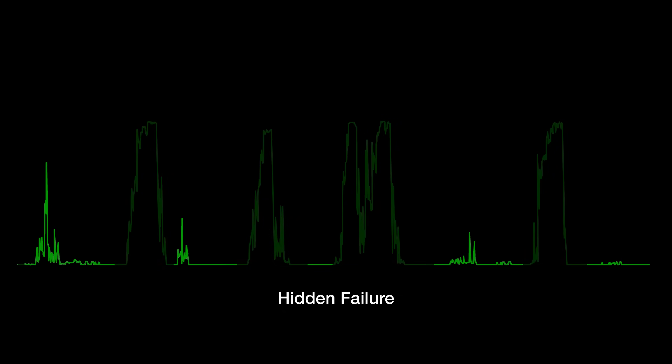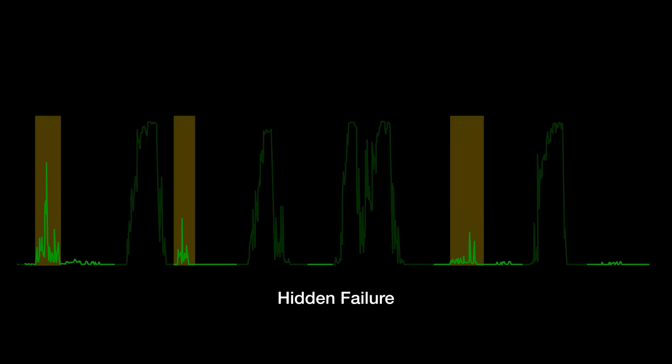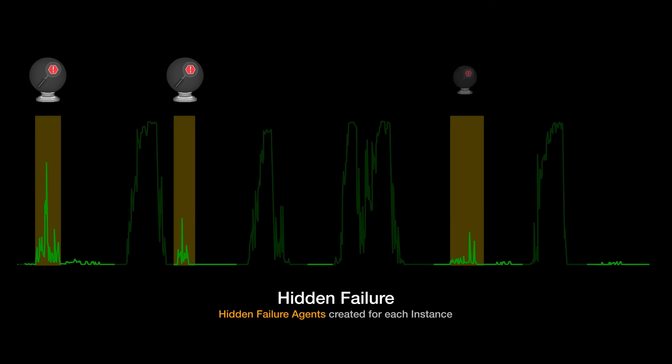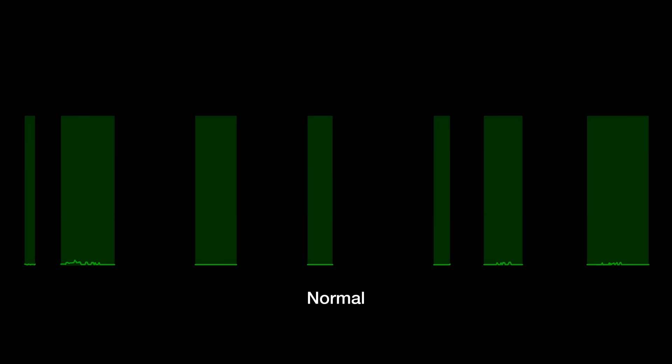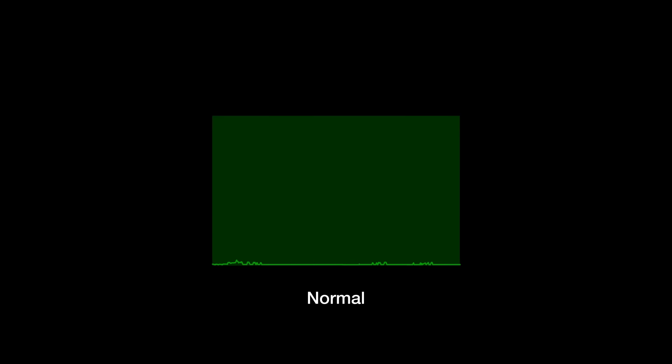Spikes, or changes in behavior not associated with an event, are categorized as hidden failures. The wizard creates hidden failure agents to watch for these specific patterns for potential failures. Once offline activity, failures, and hidden failures are removed, the purest form of normal behavior is all that remains.